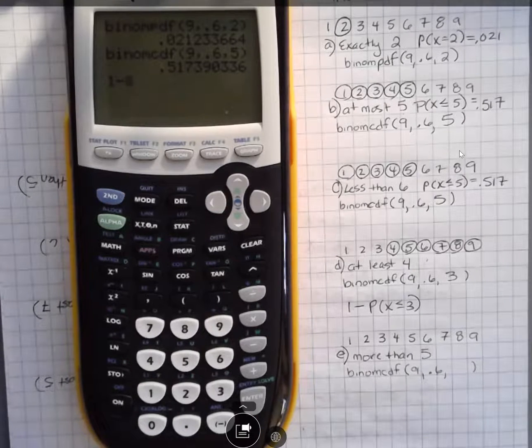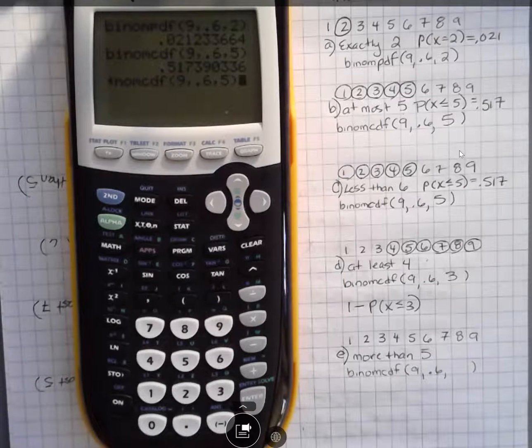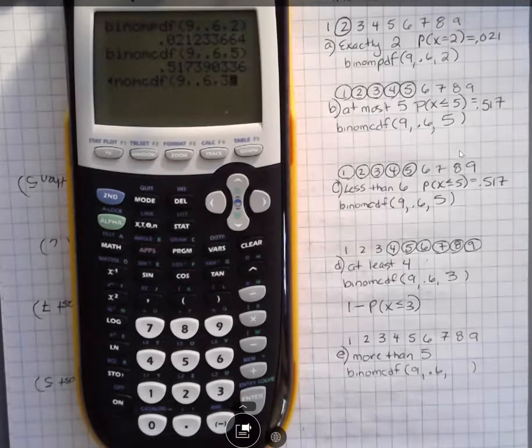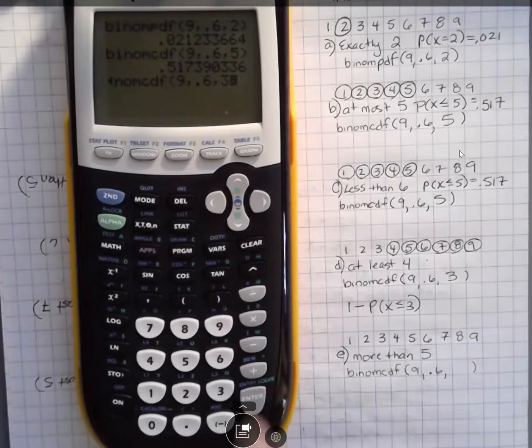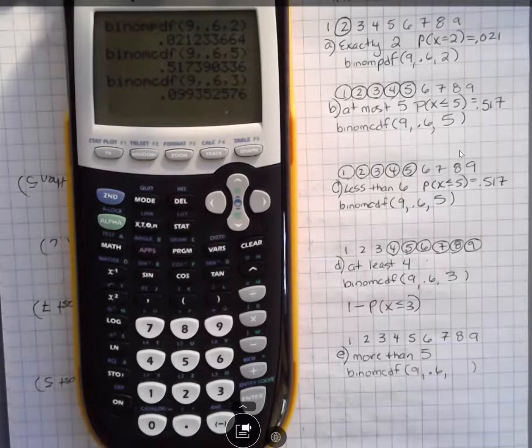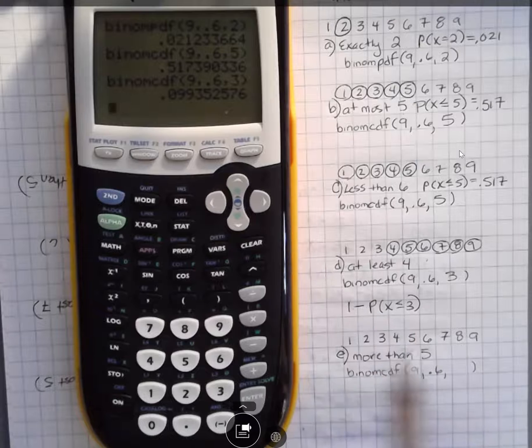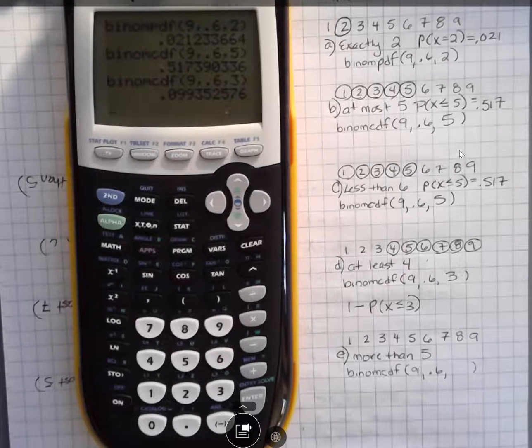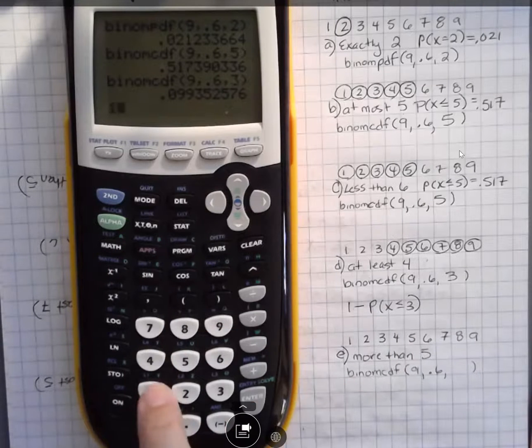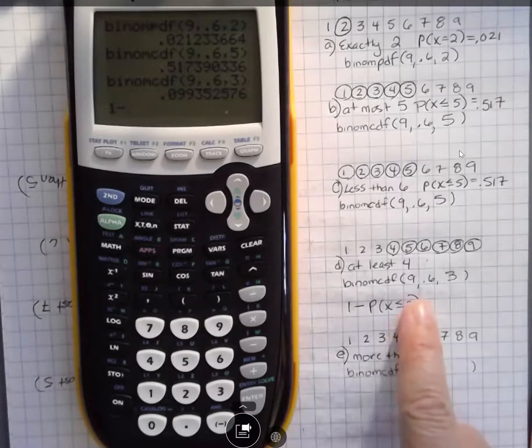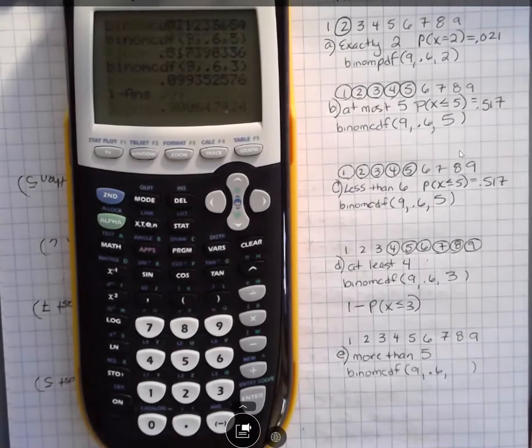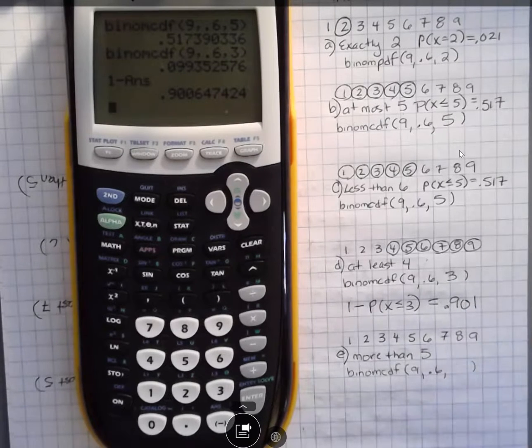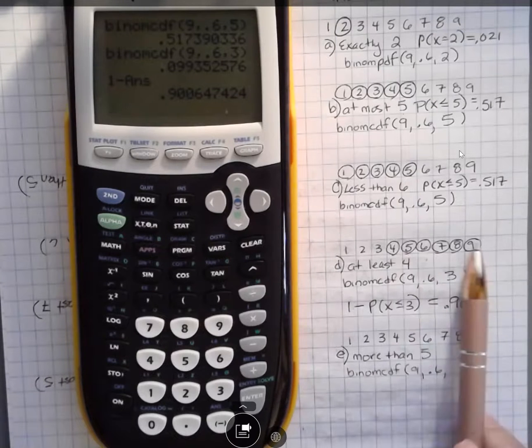We're going to say one minus and then do second function entry. And that's the last thing that we entered. We can just go back here and change that to a three. We can just hit that second function entry and bring up the last thing that we entered. So now if we hit enter, it's going to tell us that one minus the binomial CDF. This is the binomial CDF for three. So I could say one minus the answer, second function answer equals 0.901 or about 90% of the time people we talk to would be four or more of them would have that.